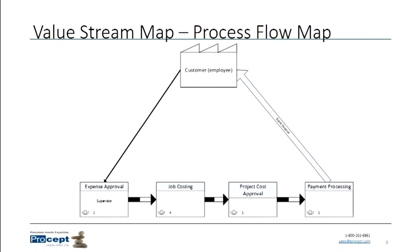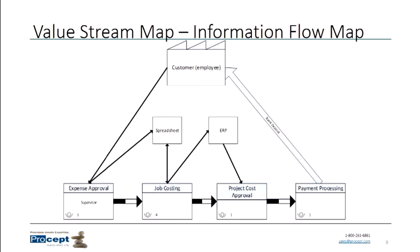The next thing we're going to add to our value stream map is the flow of information. Lean methodology is very concerned with the flow of information and communication, especially as it relates to the control of work — what are the signals, what is the information that causes work to occur, that dictates and guides actors within the process to go ahead and complete work? Information flow is the second thing we record in our value stream map.